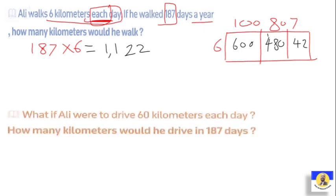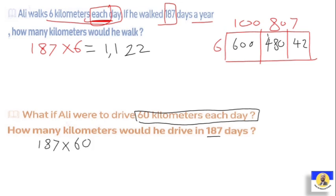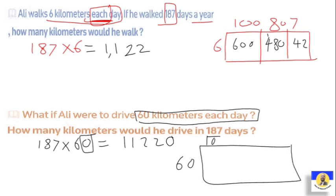Another question: what if Ali were to drive sixty kilometers each day? How many kilometers would he drive in one hundred eighty-seven days? Same system — it's still one hundred eighty-seven by sixty. Notice it's the same as before but with the extra zero at the end. Using the area model: instead of six, write sixty. So six thousand, then four thousand eight hundred, and sixty by seven equals four hundred twenty. Adding all together gives eleven thousand two hundred twenty.